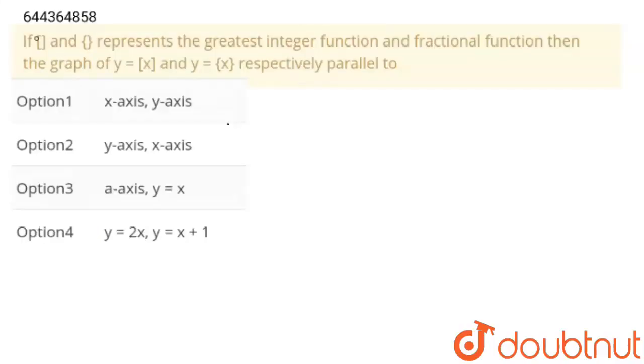Hello students, the question is: if square bracket and curly bracket represent greatest integer function and fractional function, then the graph of y equals [x] and y equals {x} respectively parallel to what? There are four options. We have to say which of the following option is correct. So let's solve this question.